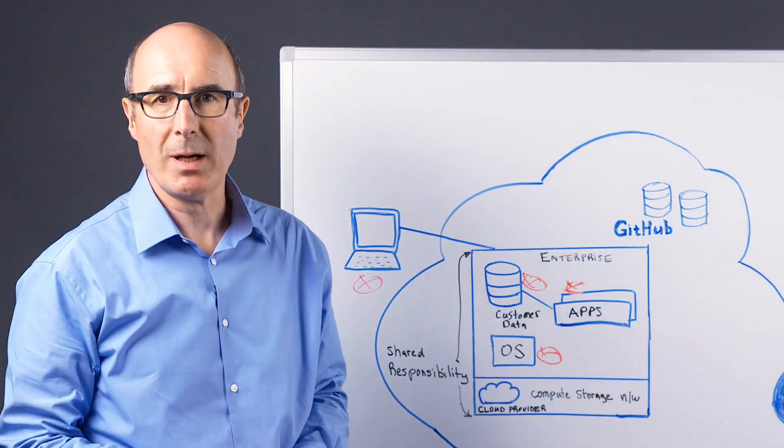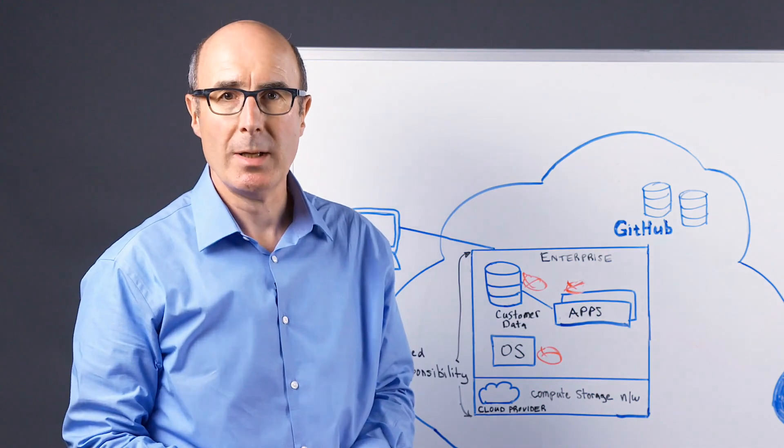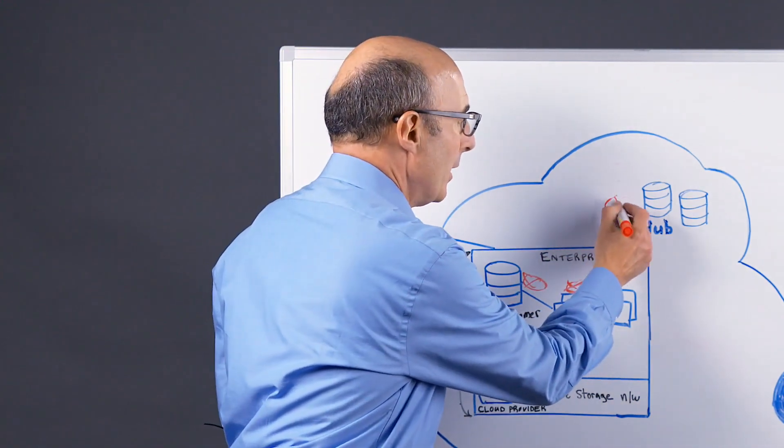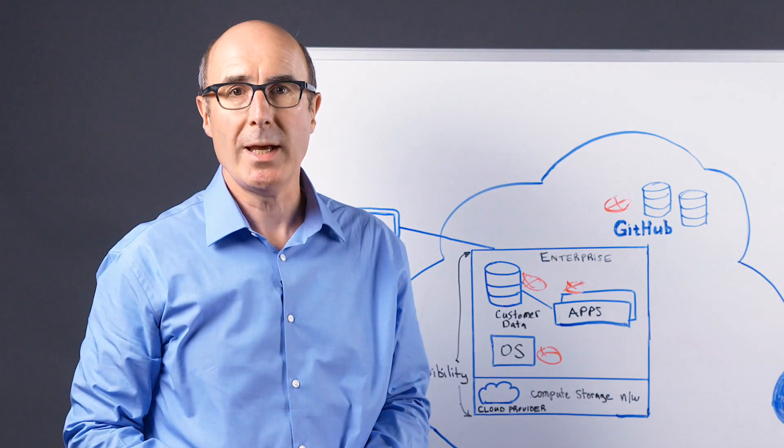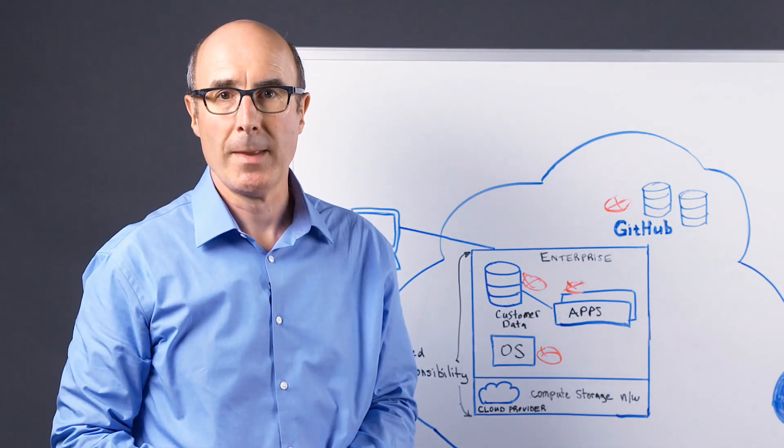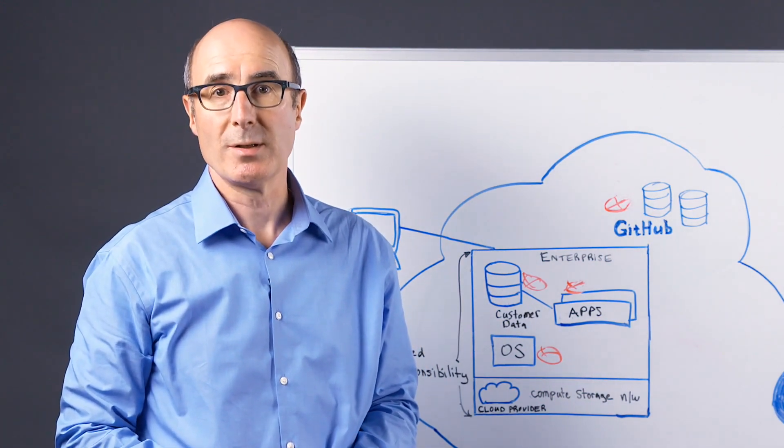Attackers also get access keys from public code repositories like GitHub. Yes, code is inadvertently dropped into public repositories without removing the access keys or API keys. Attackers use bots to troll these repositories.